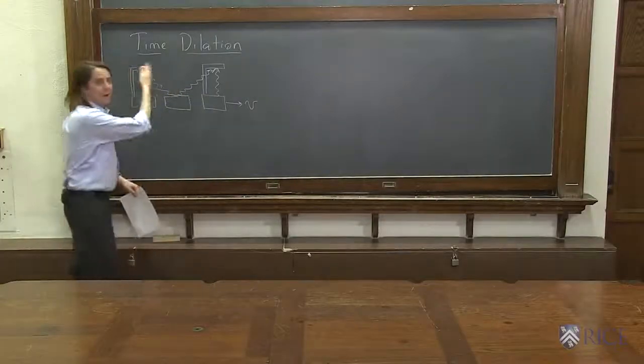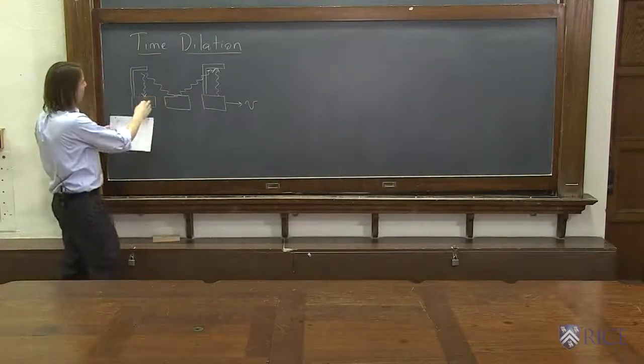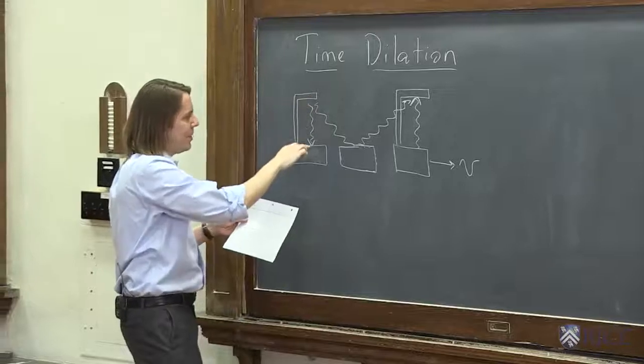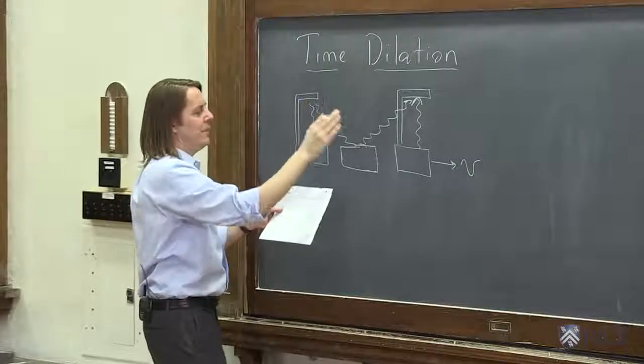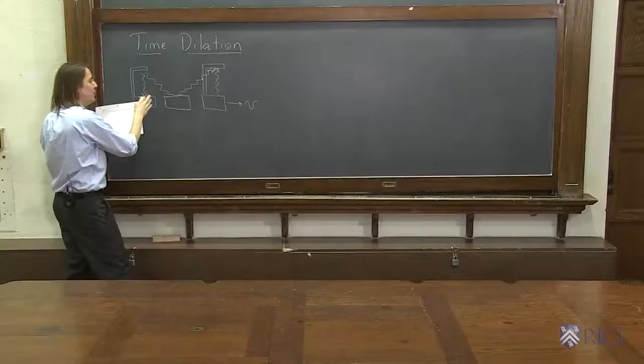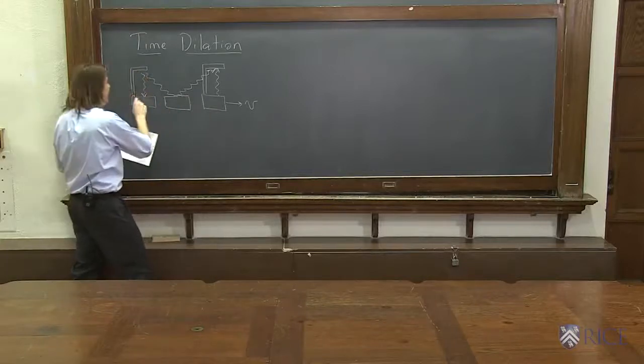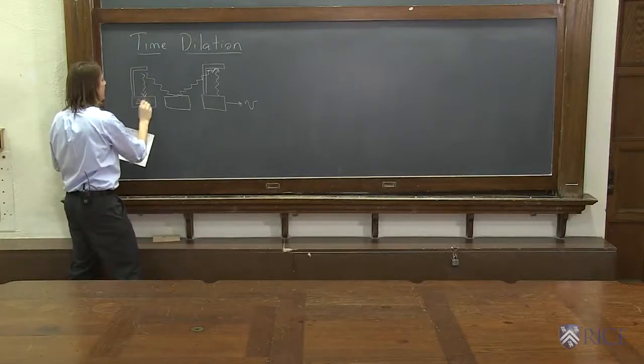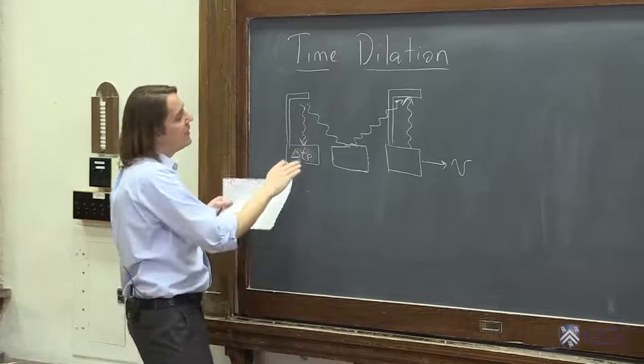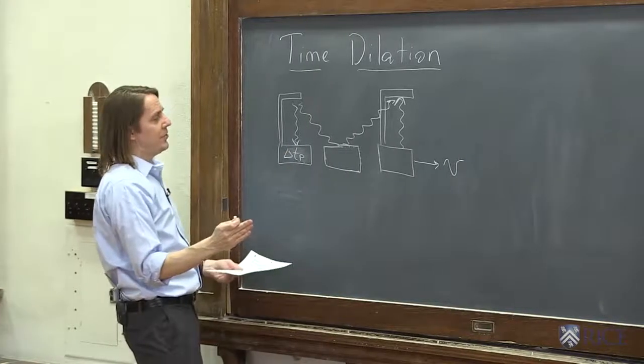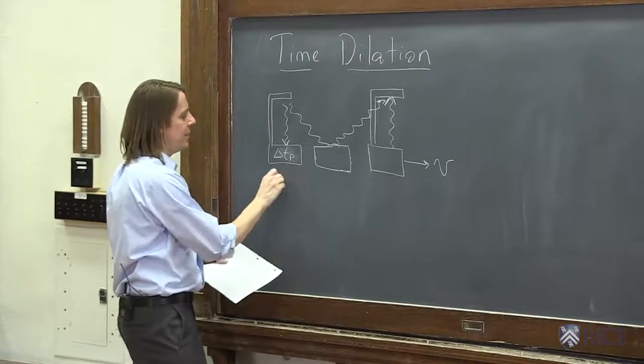So the effect that we just calculated is called time dilation. As a quick reminder, if you had this little setup where you have a flashlight bounce down and go back up, if you ask somebody in the frame of the moving object what time did they see, that's delta Tp. And if you ask somebody in the lab frame just watching this happen what time did they see, they see delta T.